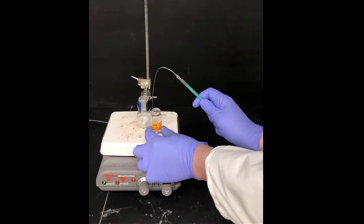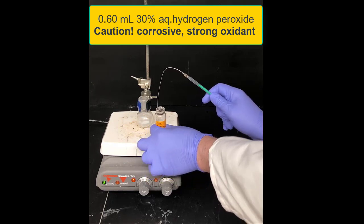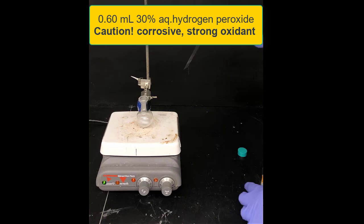Next, we'll add the 30% hydrogen peroxide. This is a reminder to use caution with this reagent because it's very corrosive and a strong oxidant. You should definitely wear gloves when you're transferring this reagent.